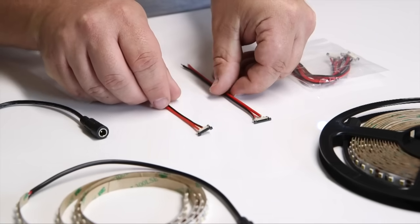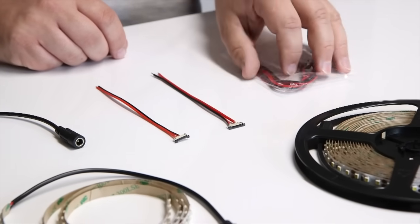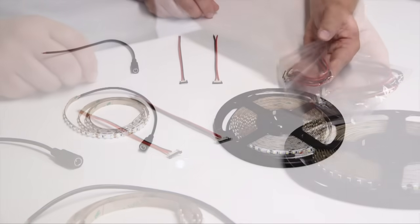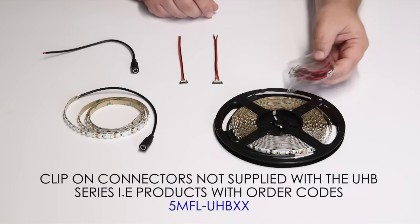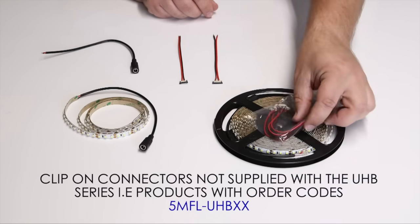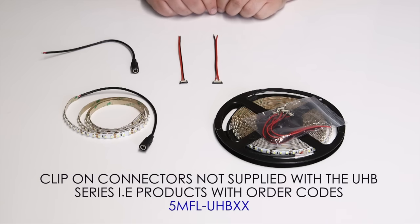Each full 5 metre reel of our LED strip is supplied with 5 of the appropriate clip-on connectors. These types of connectors are not suitable for use with our Ultra High Brightness series of strip due to its high power output.